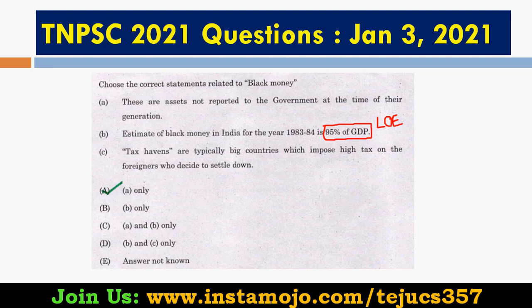GDP is 95% of black money — you can eliminate these statements using the Law of Extremes. This is a good technique. You can also apply a lot of personal techniques and prepare a lot of examples. If you apply the Law of Extremes for 95% of GDPR, you will eliminate those extreme statements.